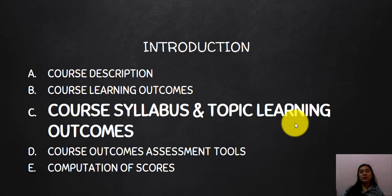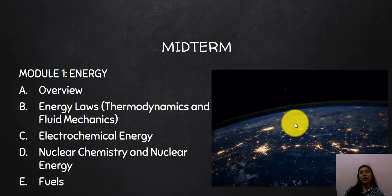Next is the course syllabus and topic learning outcomes. We have five modules for this course. Modules one and two will be covered for midterms, and modules three, four, and five are for the finals.